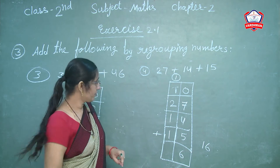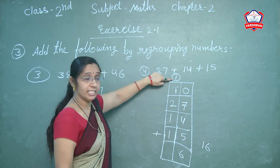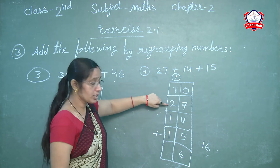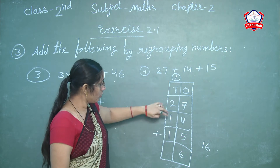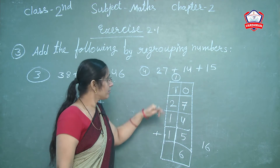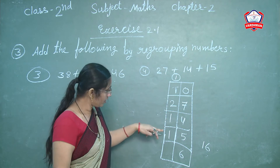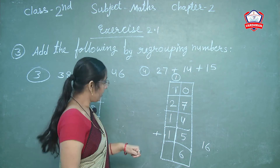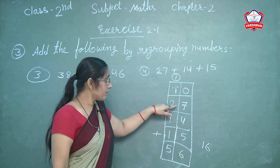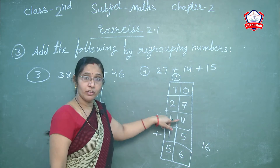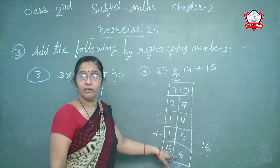Now add the tens column. First digit is 1 carry, next is 2, next is 1, next is 1. Add all: 1 plus 2 is 3, then 3 plus 1 is 4, then 4 plus 1 is 5. So write 5. Therefore 27 plus 14 plus 15 with 1 carry gives the answer 56.